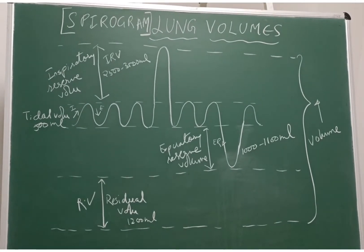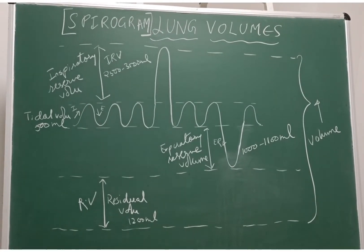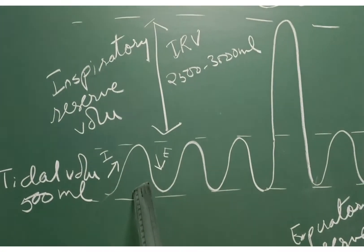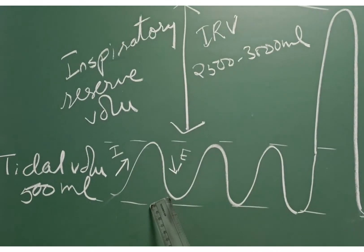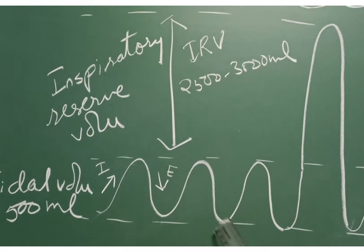A convenient way of measuring lung volume is by using a spirometer. The first wave is the tidal volume, around 500ml. It is the volume of air which is breathed in and out of the lungs during quiet respiration.